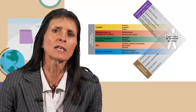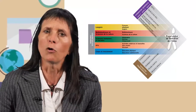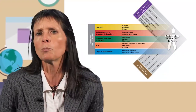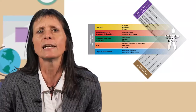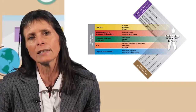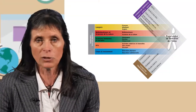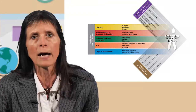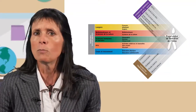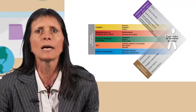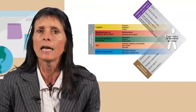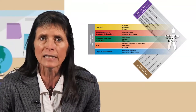Pour ce faire, il ajoute au domaine disciplinaire deux axes transversaux qui, en formant une flèche, indiquent que le projet global de formation de l'élève ne peut être réalisé que dans cette transversalité. Ces deux axes sont d'une part des capacités transversales, mentionnant la collaboration, la communication, les stratégies d'apprentissage, la pensée créatrice et les démarches réflexives.